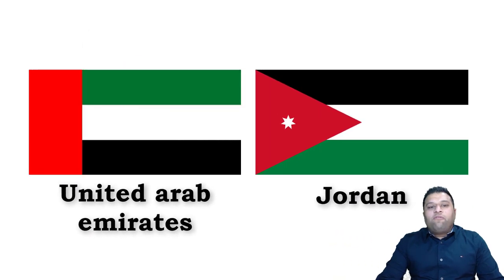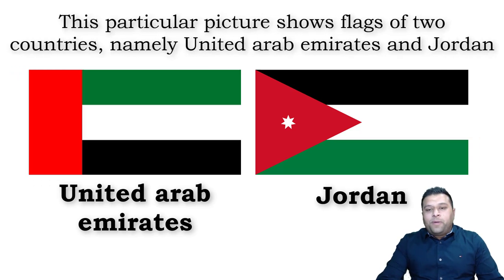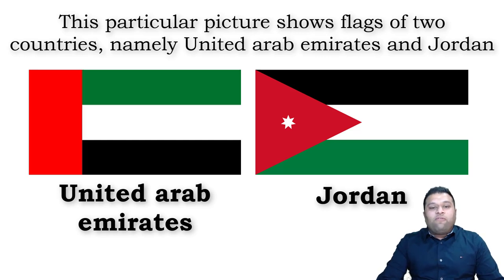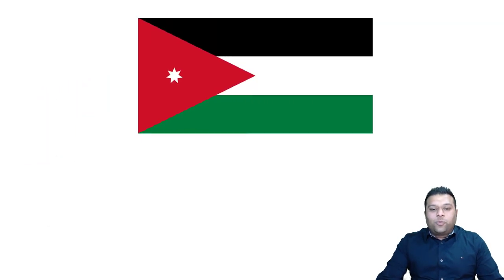Now I'm going to show this structure applied to different types of images. This image is of a flag that you normally get in your exam. Sometimes you get flags with names, other times without names. This particular one shows United Arab Emirates and the flag of Jordan. I can simply say: 'This picture shows flags of two countries, namely UAE and Jordan.' Comparing two flags is easier, but describing one flag is more difficult, so let's focus on how to describe just one flag.